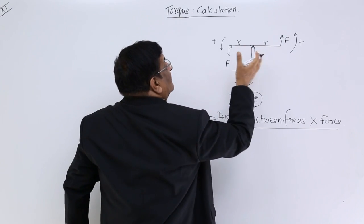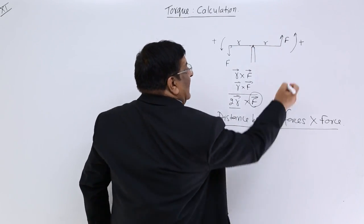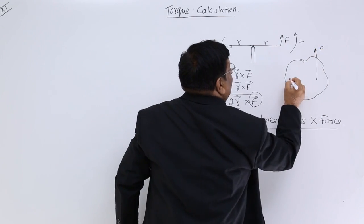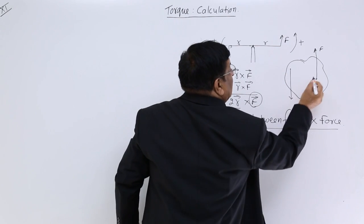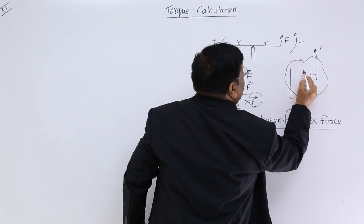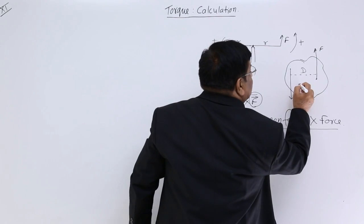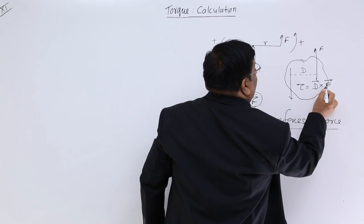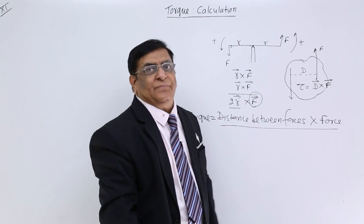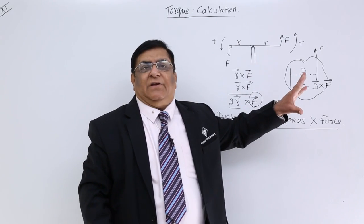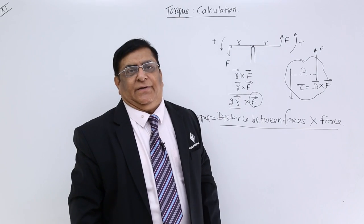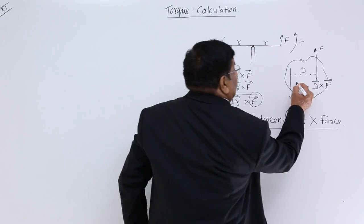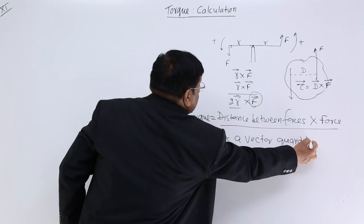Now this distance in this particular case is equal to 2R, but it may not always be 2R — it may be anything else. Here is a body; I apply one force here and one force here. The normal distance between the two is equal to D. How much is the torque in this case? Torque is equal to D multiplied by F. Is torque having a direction, or is it a scalar quantity? The answer is torque has direction — it is a vector quantity.